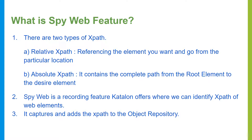Using this spy web feature we can identify the XPaths which we are going to use in our applications. There are two types of XPaths available: one is the relative XPath and one is the absolute XPath. Relative XPath helps in referencing the element from a particular location, and absolute XPath contains the complete path from the root of the element to the desired element. Spy web helps us capture these XPaths to identify those web objects so that we can automate them.